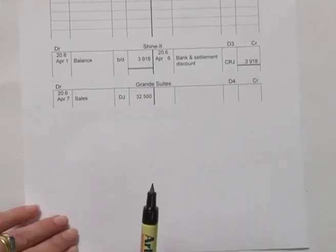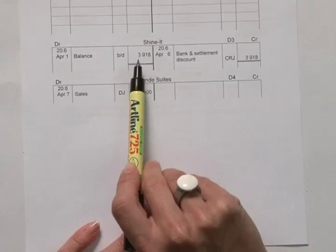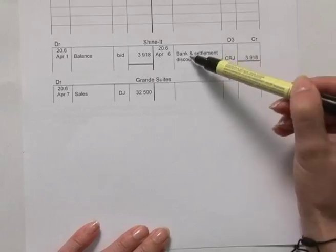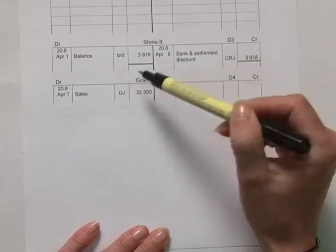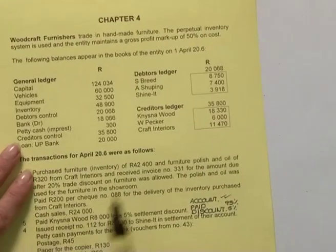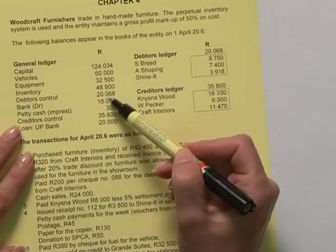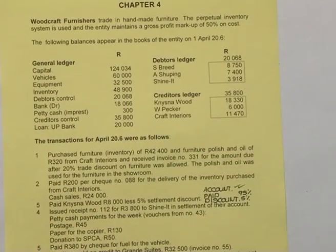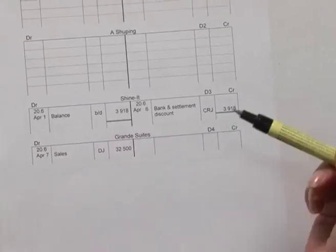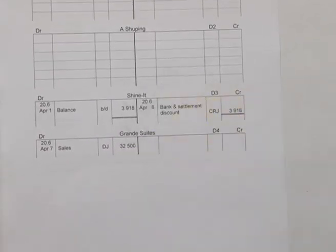At the end of the month, you will balance all of these debtor's accounts. They won't necessarily only have entries on the debit side — for example, ShineIt owed us an amount on the debit side, and we received a payment in the cash receipts journal, resulting in no balance for ShineIt. You want the total of your debtors ledger to agree with the total of your debtors control account. You will follow the same process for creditors, not only in the journals but also in the individual accounts.